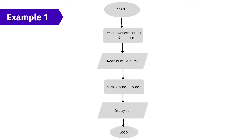Let's look at an example of a flowchart to add two numbers. First, we start. We declare three variables num1, num2, and sum. We read two numbers as input from the user and store them in num1 and num2. We add the two values and store the result in the sum variable. Finally, we display the sum and that is the end of this flowchart.